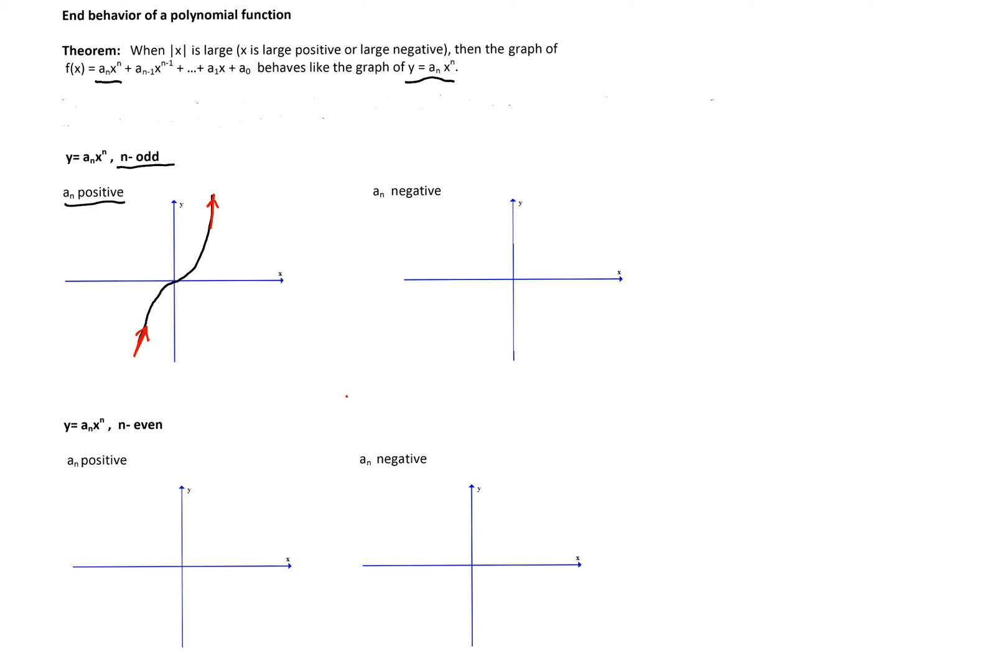Now if a_n is negative, the graph looks like a reflected cube function. So this time we'll start the graph going down and we'll end the graph going down as well.